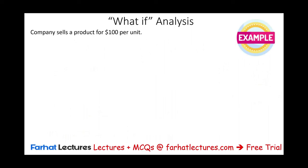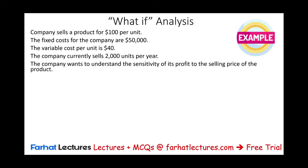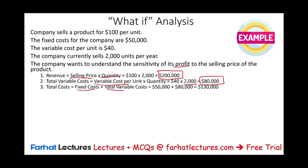Let's look at a simple example. A company sells a product for $100 per unit. The fixed cost is $50,000. The variable cost is $40 per unit. The company currently sells 2,000 units. Sales equals $100 times 2,000 units, giving us $200,000. Variable cost is $40 times 2,000 units, which is $80,000. Total cost is fixed cost plus variable cost: $50,000 plus $80,000 equals $130,000. Profit is revenue minus total cost, equal to $70,000.